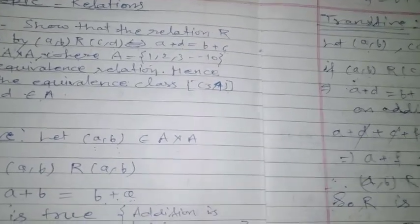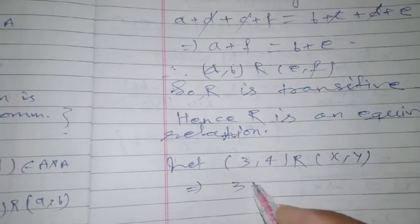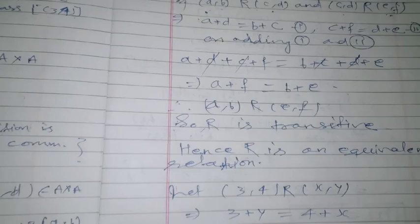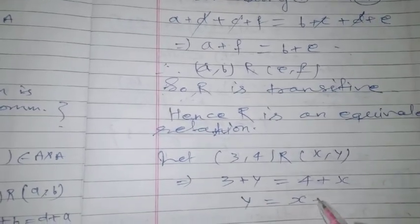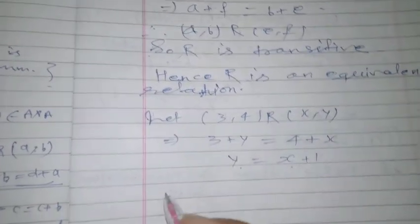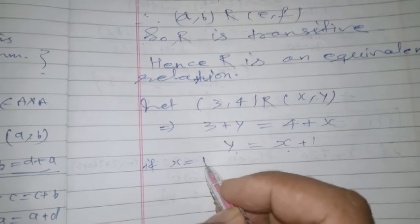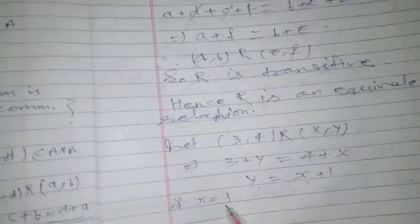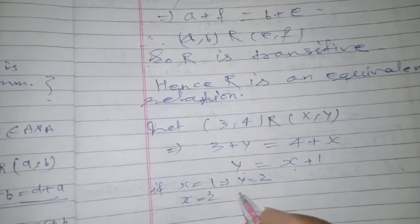Now we find the equivalence class of (3,4). This means finding all ordered pairs (x,y) that are related to (3,4). Let (3,4) R (x,y). By the definition of the relation, 3+y = 4+x, so y = x+1. Since x and y must belong to set A = {1,...,10}, we substitute: if x=1, y=2; if x=2, y=3; if x=3, y=4.